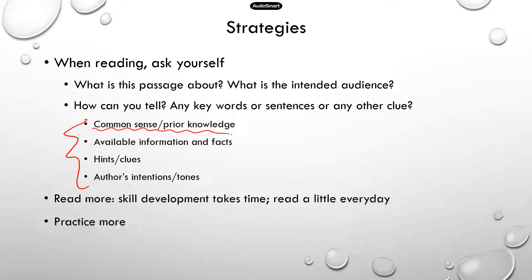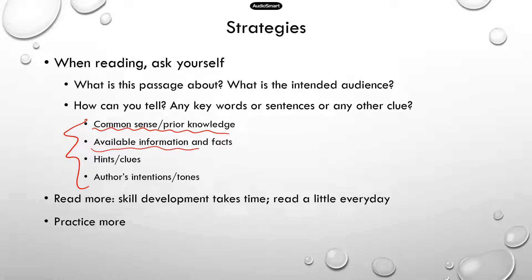More specifically, there are a few things that will help you. First, common sense and prior knowledge — a lot of times you're familiar with people's behavior, what they would say or how they would act in certain scenarios, so that would help you identify what the author's purposes and intentions are. Second, available information, facts, hints, and clues that are available in the writing will be useful for you to figure out what idea the author is trying to convey.